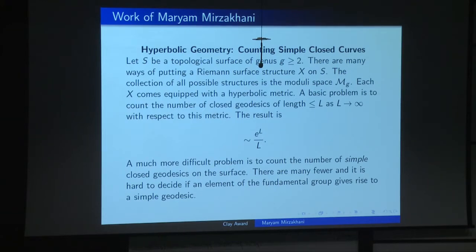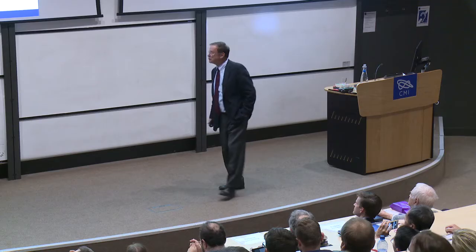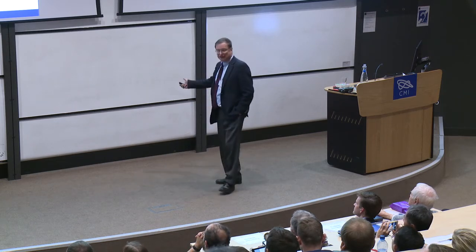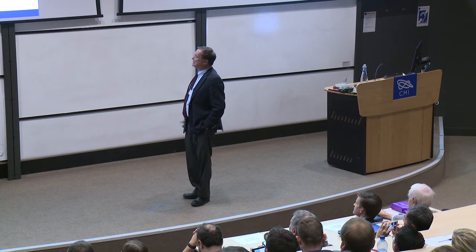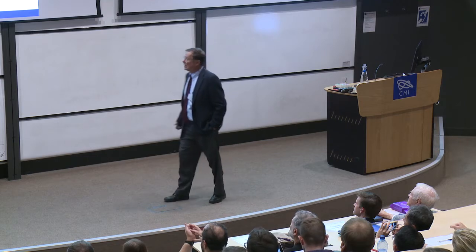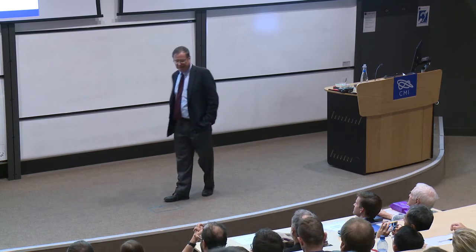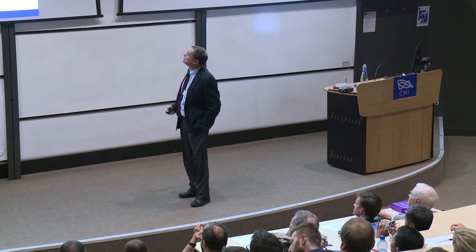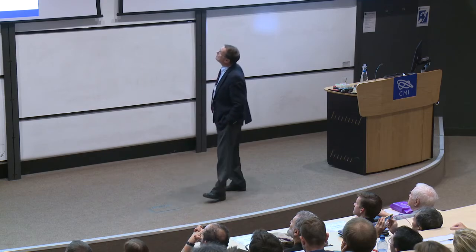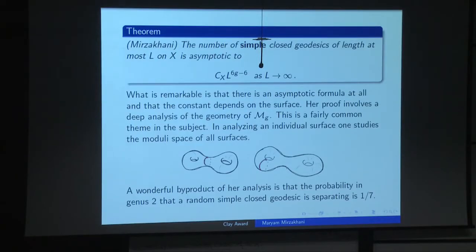A more difficult problem is to count the number of simple closed geodesics. More generally she considered curves with k self-intersections, but here I'll focus on her earlier work counting simple closed geodesics. There are many fewer of them, and it's hard to decide if an element of the fundamental group or the free homotopy class gives rise to a simple geodesic. The theorem states: the number of simple closed geodesics of length at most L on surface X is asymptotic to a constant C_X depending on X.